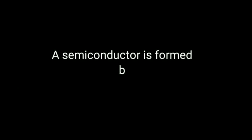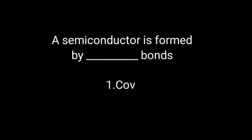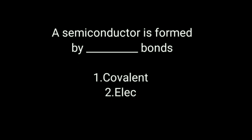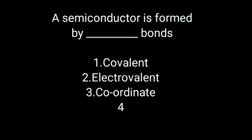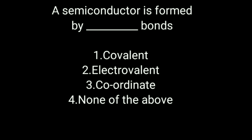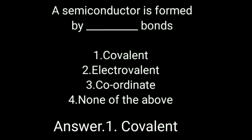Next question: A semiconductor is formed by dash bonds. Option 1: Covalent bond. Option 2: Electrovalent bond. Option 3: Coordinate bond. Option 4: None of the above. Answer is covalent bond.